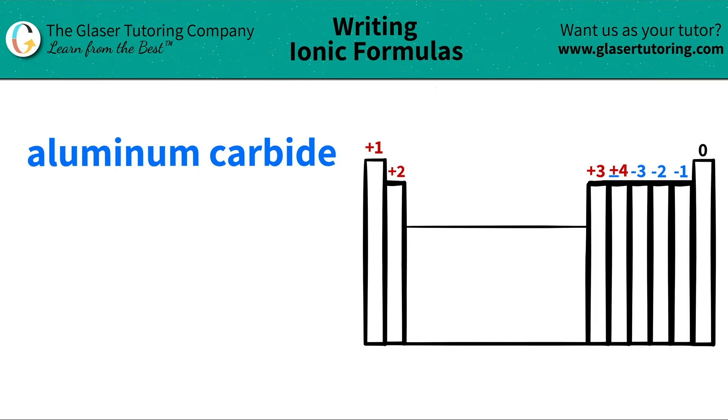Today, we are going to be writing the formula for the ionic compound aluminum carbide. So let's see where these elements are located on the periodic table, and then we will take it from there.